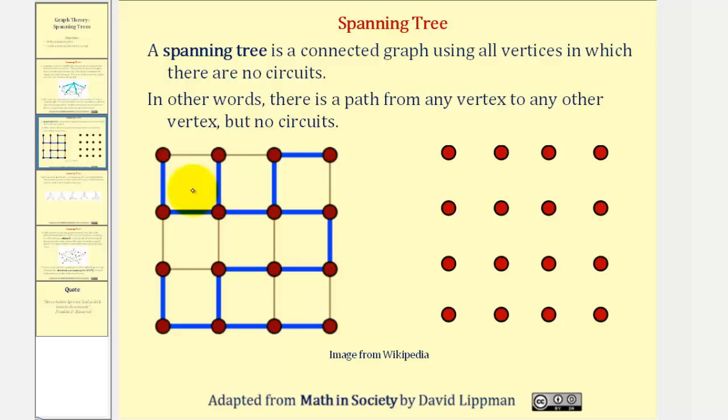Looking at this graph on the left, the dark blue path is an example of a spanning tree. For a given graph, there are often many spanning trees possible. For example, for the same graph, a spanning tree might look something like this.